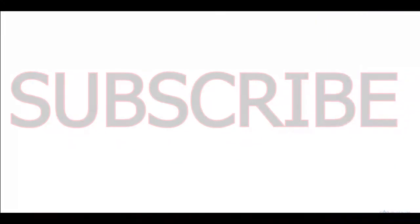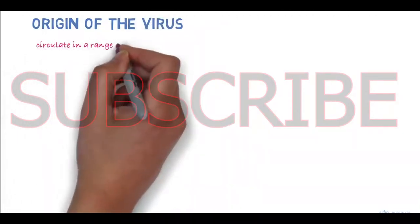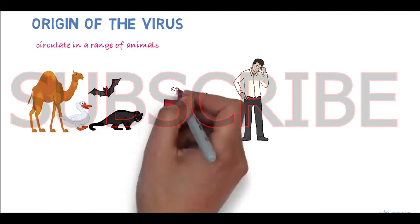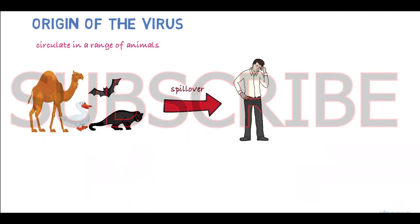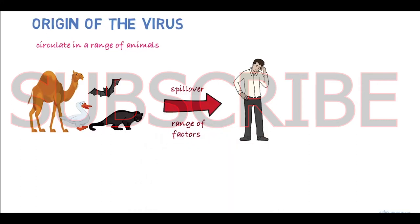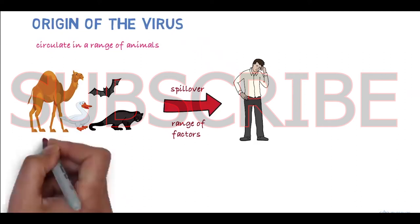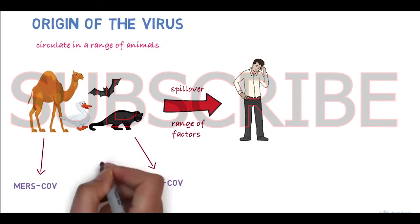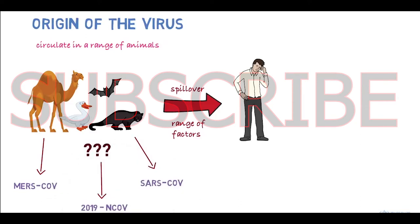So, where did the virus come from? It's known that coronaviruses circulate in a range of animals. Sometimes these viruses can make the jump from animals to humans. This is called a spillover and could be due to a range of factors such as mutations in the virus or increased contact between humans and animals. For example, MERS-CoV is known to be transmitted from camels and SARS-CoV from civet cats. The animal reservoir of the 2019 novel coronavirus is not known yet.